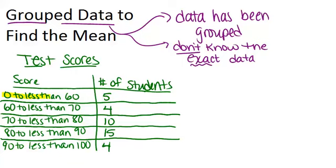The first group is for all of the scores that were between 0 and 60, but not including 60. And 5 students got less than 60 on this test. 4 students got between 60 and 70. 10 students got between 70 and 80, and so on.